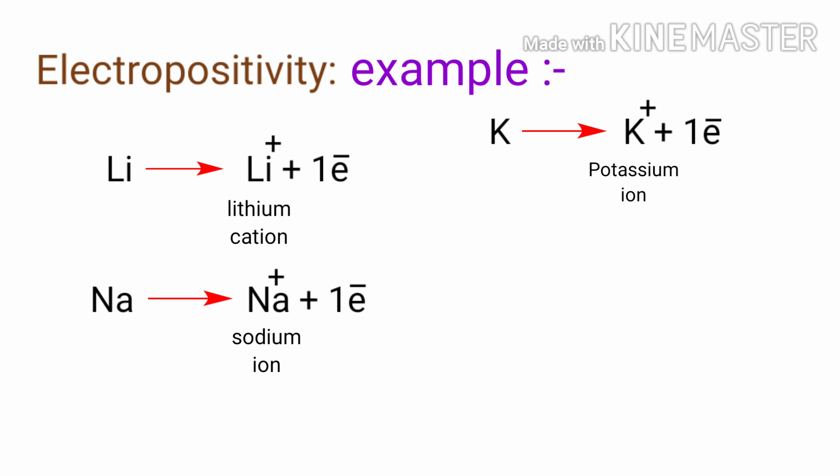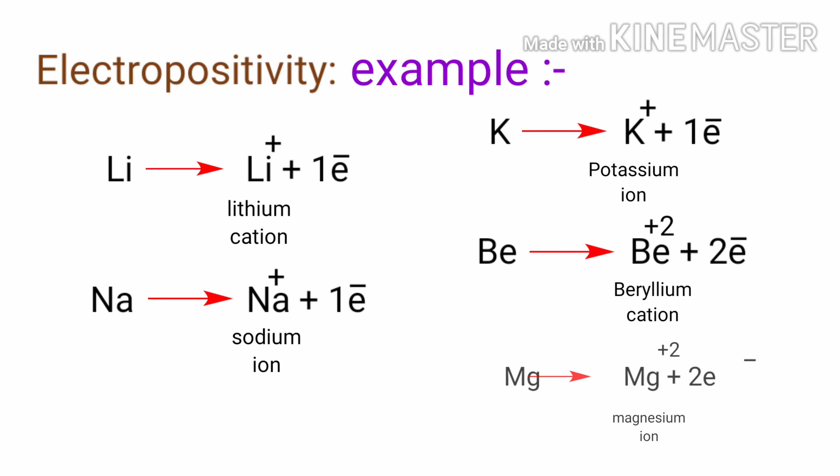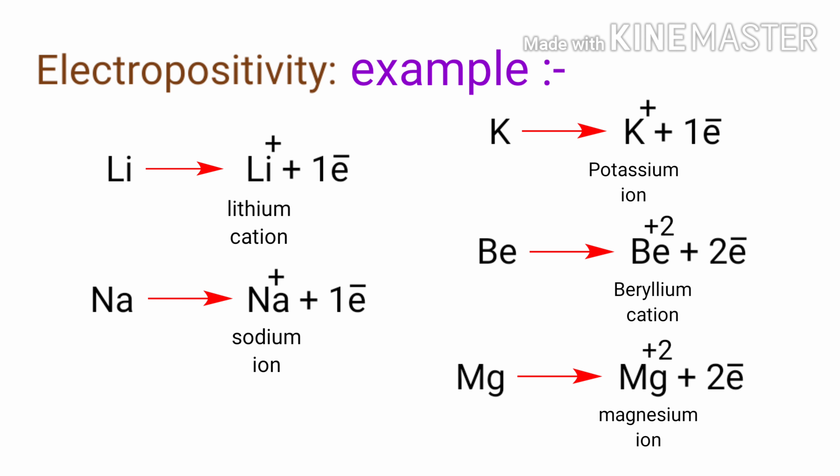Potassium has one valence electron, and it tends to lose one electron and form a potassium ion. Beryllium has two valence electrons, and it tends to lose two electrons and form a beryllium cation. Magnesium has two valence electrons, and it tends to lose two electrons and form a magnesium ion.